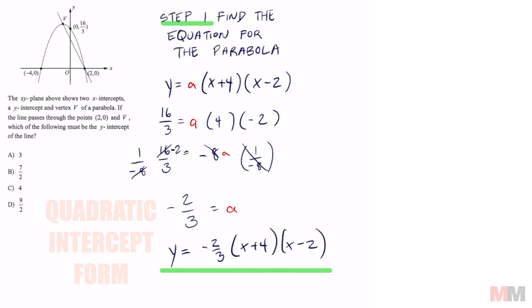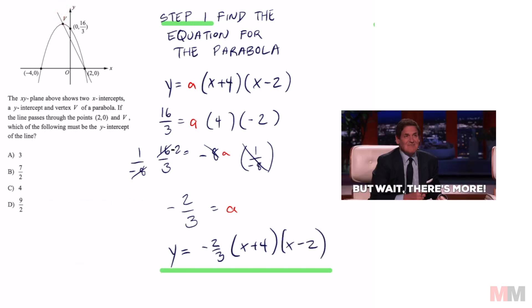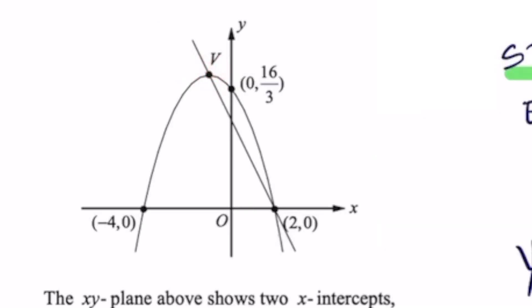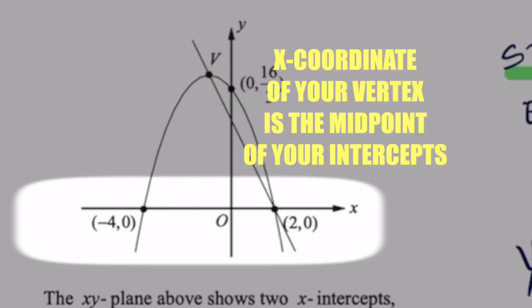The next thing we need are the coordinates for the vertex. The vertex is always going to be in the middle of these two points, so the x-coordinate of that vertex is going to be the midpoint of negative 4 and 2, which is negative 1.